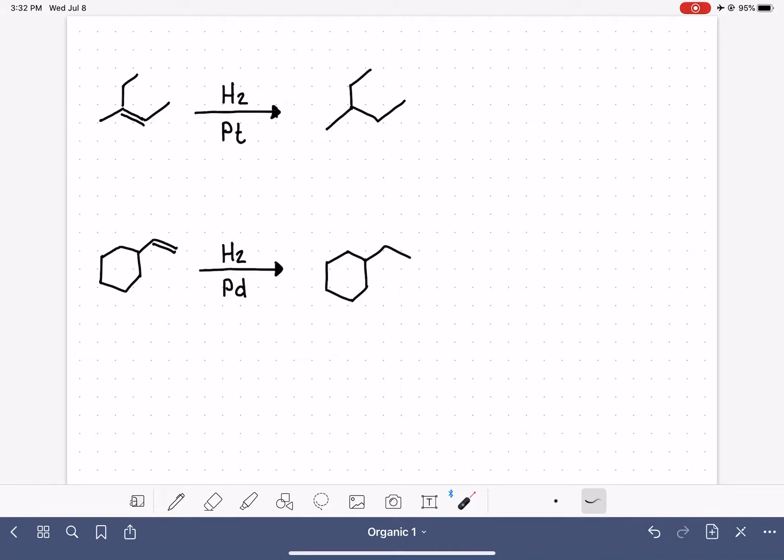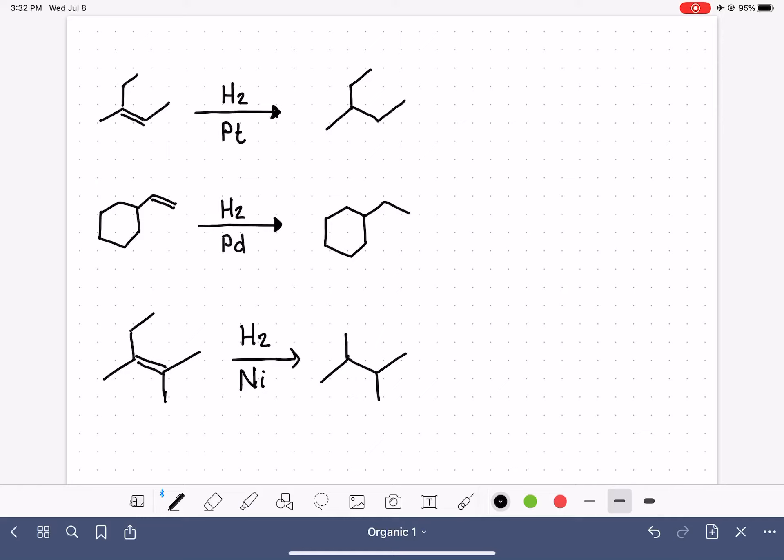Those are both not great examples because I'm not giving you an opportunity to practice how to navigate this if we have a chiral carbon. So let's do one more example. Let's do this one right here. Okay, so start by drawing out the carbon skeleton and find the carbons that we're working on.